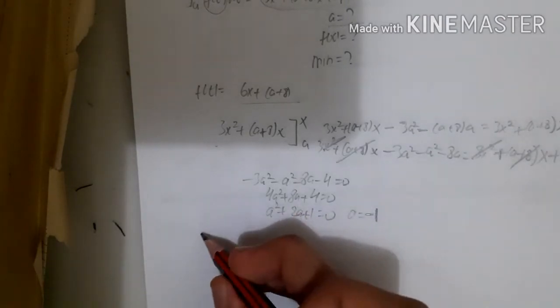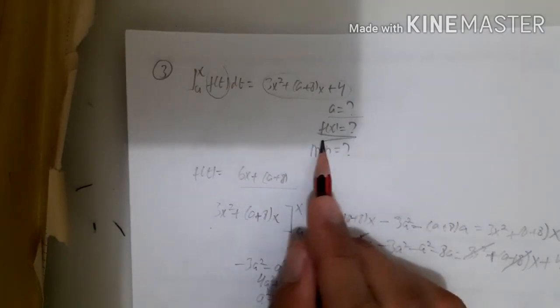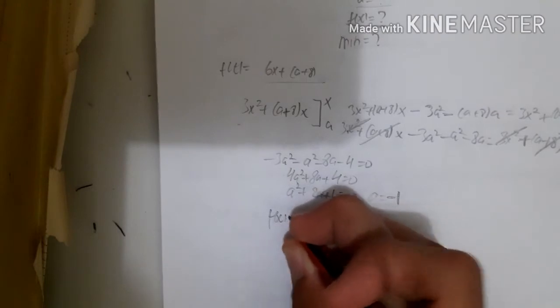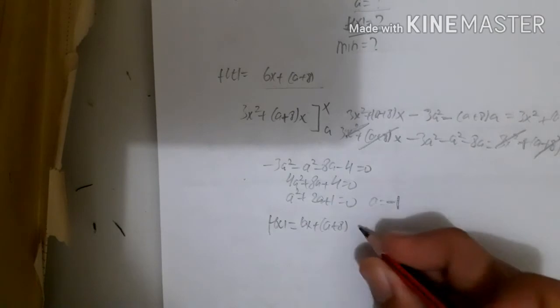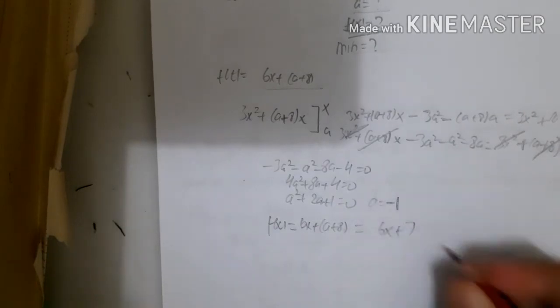And then to find f(x), you know that f(x) is actually just the f(t) here. So f(x) we got just now is 6x + a + 8, and we already know a is -1, so it is 6x + 7.